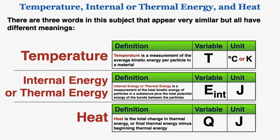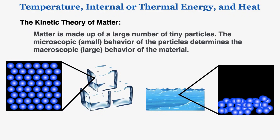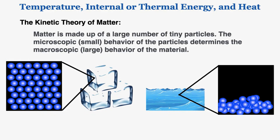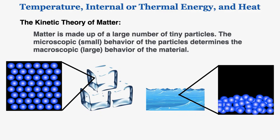That's everything you need to know about the difference between temperature, internal energy, and heat — their definitions, variables, and units. Just remember that all our understanding of this material comes from the central idea of the kinetic theory of matter: matter is made up of a large number of tiny particles, and the microscopic behavior of the particles determines the macroscopic behavior of the material. This will come up a lot as we begin to explore this topic more in the next few videos.